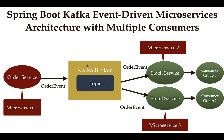In this series, you will learn how to build a couple of microservices and use Apache Kafka as a message broker for asynchronous communication between multiple microservices. You will build an Order Service, Stock Service, and Email Service microservice, and use the Kafka broker for async communication between them. Most importantly, you will learn how to create multiple consumers that subscribe to a single topic — a common real-time event-driven microservice pattern.